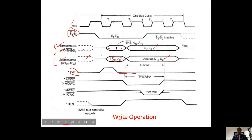For a write operation, we can select memory write command bar (MWTC bar) or advanced memory write command bar, or IO write command bar or advanced IO write command bar. All are bar signals and must be low from T2 to T4. Either memory or IO can be selected as per the requirement. DEN should be high from T2 to T4 for write, and before T2 it should be low.